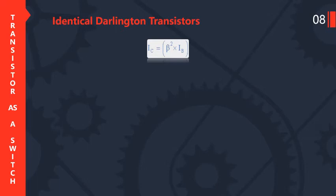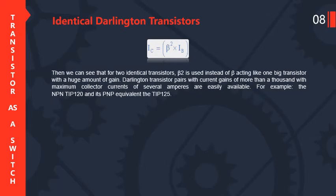For two identical transistors configured as a Darlington pair, beta² is used, acting like one big transistor with a huge amount of gain. Darlington transistors with a current gain of more than 1000 and maximum collector currents of several amperes are easily available — for example, the NPN TIB120 and its PNP equivalent, the TIB125.